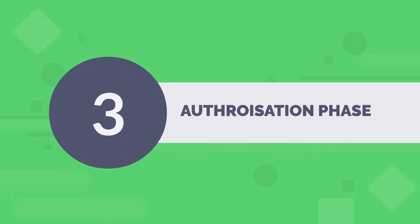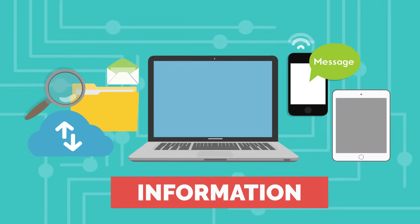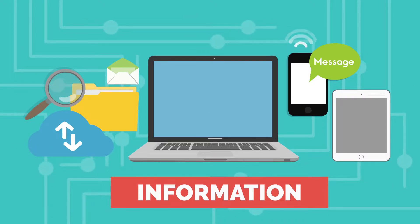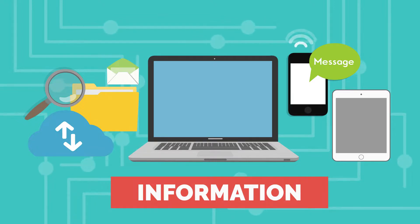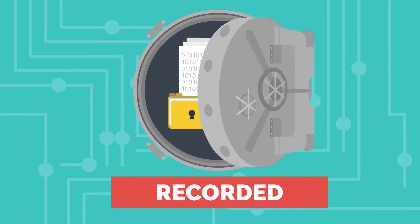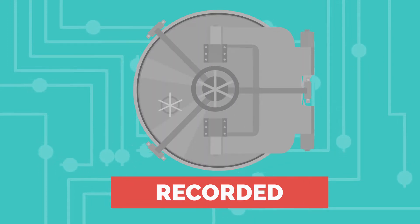Three: authorization phase. The bank relays to the user what information is about to be shared with the TPP. The bank asks the user if they authorize the sharing of account information, always allowing for request denial. The response from the user is sent to the bank's back-end, and data must be recorded accordingly.